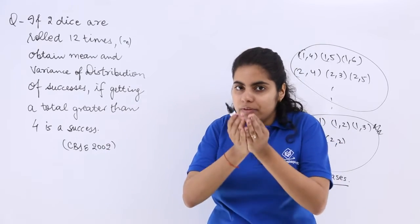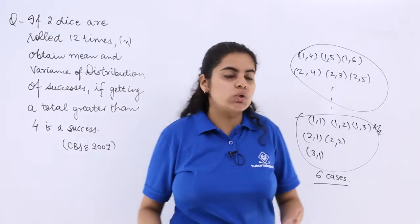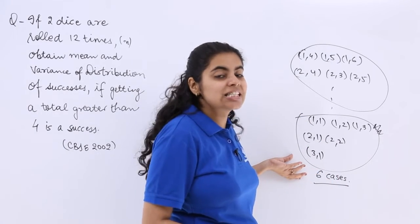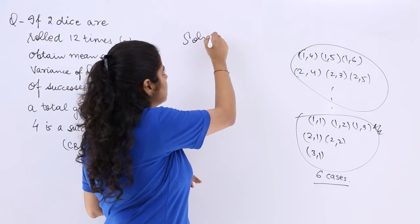That means if getting a total greater than 4 is a success which is P, so here this is Q. So this is how we will be doing this. Now I start with the basic solution.